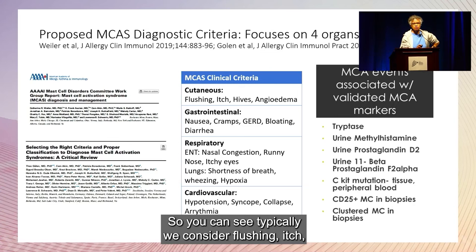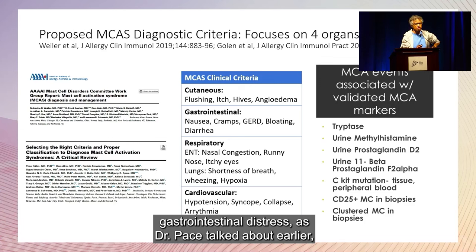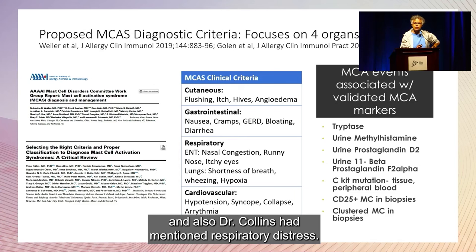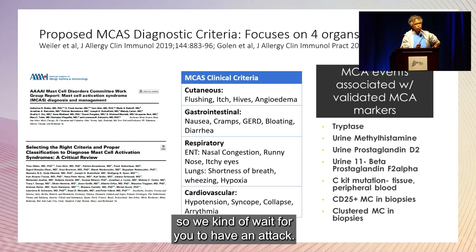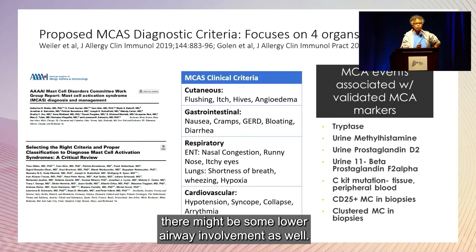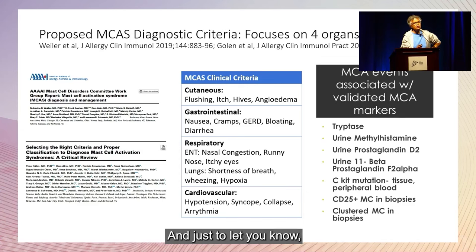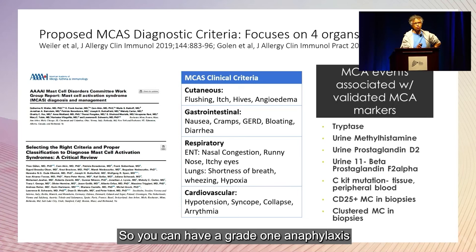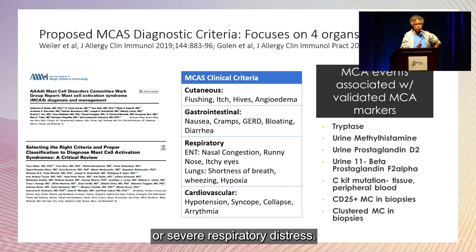We typically consider flushing, itch, and pruritus as skin manifestations, as well as gastrointestinal distress and respiratory distress. Despite asthma impacting one out of ten people, we don't screen for this disorder — we wait for you to have an attack. If you're having symptoms, get a breathing test to check for lower airway involvement. There's also cardiovascular involvement in the form of anaphylaxis, which ranges from grade one — like a 1.2 on the Richter scale — to a 5.6 where you should have called 9-1-1 twenty minutes ago due to cardiovascular or severe respiratory distress.